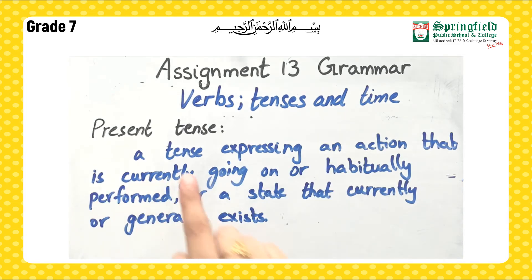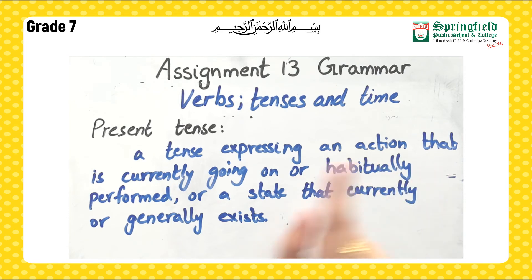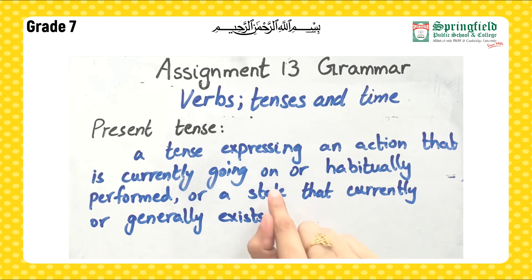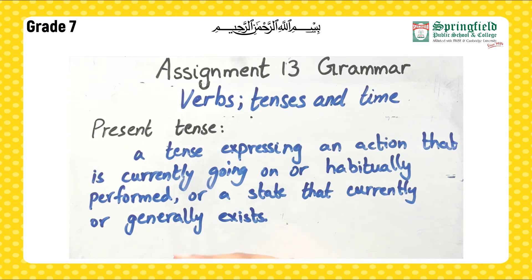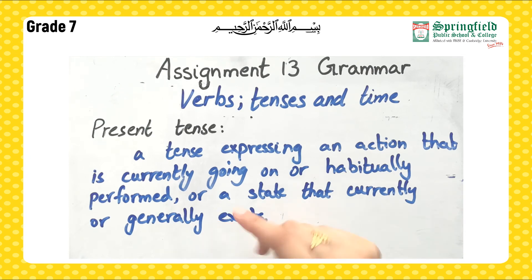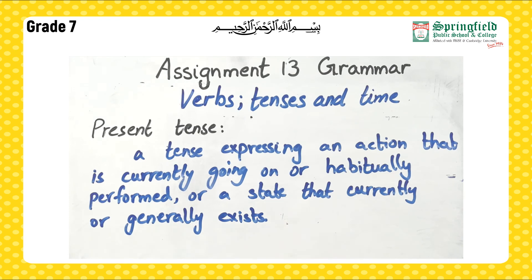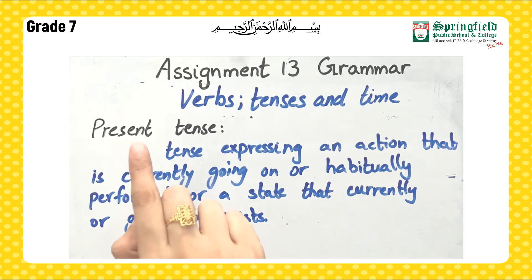Next is present tense. Present tense is a tense expressing an action that is currently going on or a habitually performed action — for example, 'She goes running every day,' which is a habitual action. It also covers a state that currently or generally exists. When you're talking about something that generally exists, we refer to it as present tense.